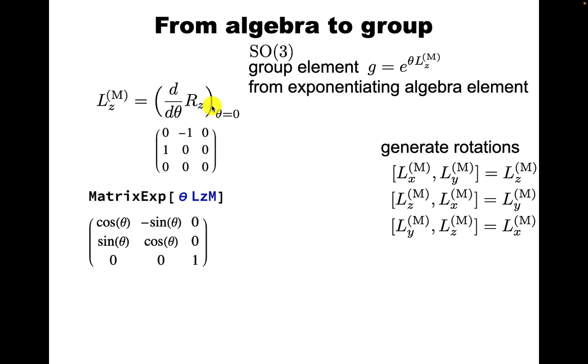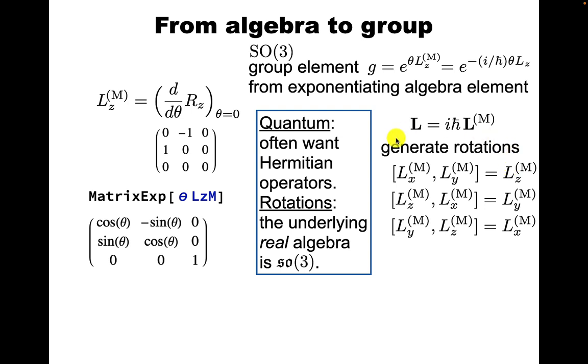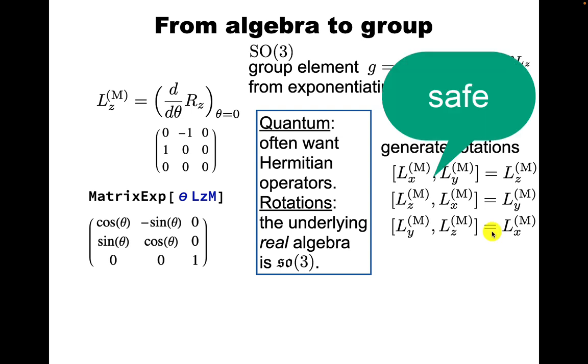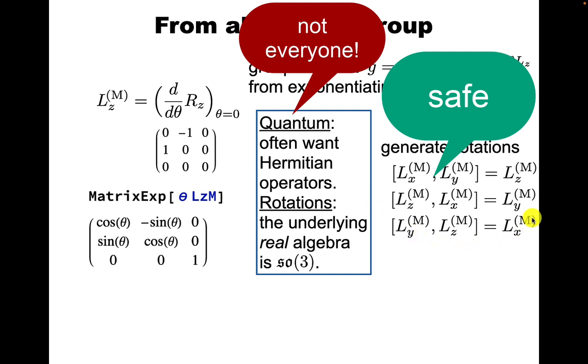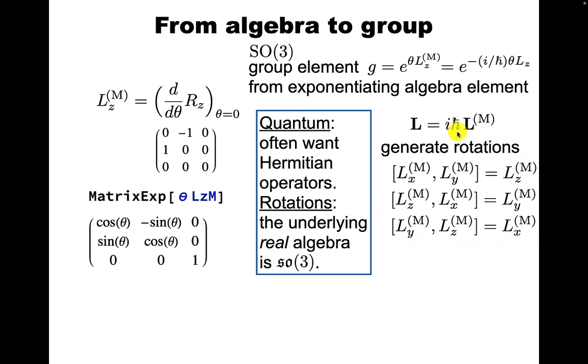The SO3 algebra, written with this funny typeface Fraktur, exponentiates to the group element of special orthogonal group rotation matrices. The three matrices you get this way satisfy this algebra. And the relationship is that in quantum mechanics, we usually want Hermitian operators. This is not Hermitian because it's anti-symmetric. If you transpose it, you get minus itself. But if you put an i and you take Hermitian transpose, then you get back the same thing. So L is Hermitian, L_m is real and anti-symmetric.